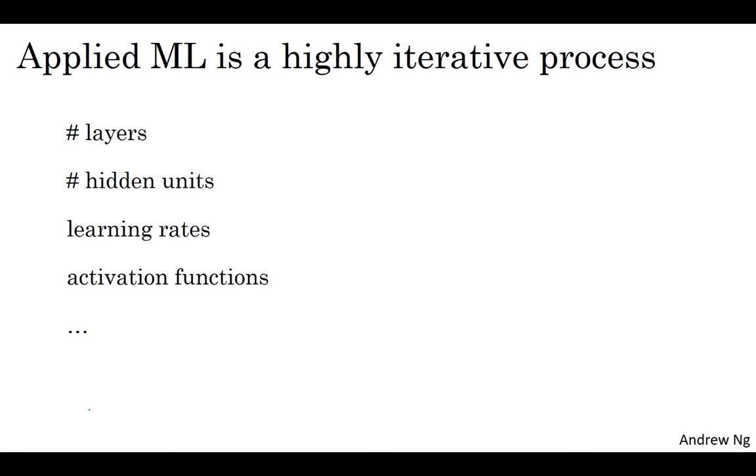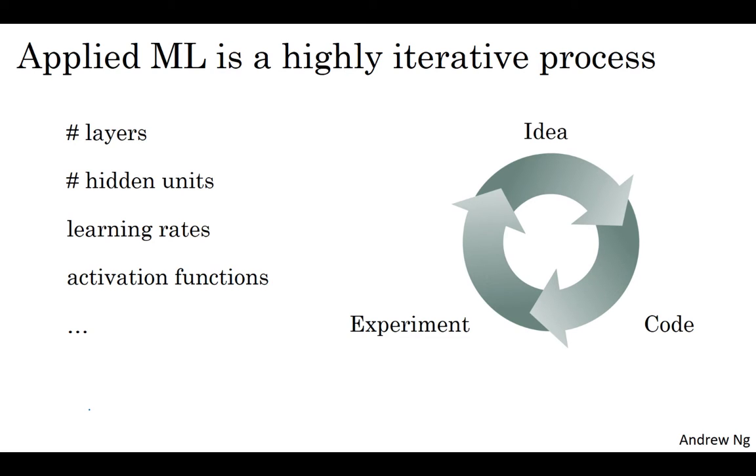So in practice, applied machine learning is a highly iterative process, in which you often start with an idea, such as you want to build a neural network of a certain number of layers, a certain number of hidden units, maybe on certain datasets and so on, and then you just have to code it up and try it. By running your code, you run an experiment, and you get back a result that tells you how well this particular network or this particular configuration works, and based on the outcome you might then refine your ideas and change your choices and maybe keep iterating in order to try to find a better and a better neural network.